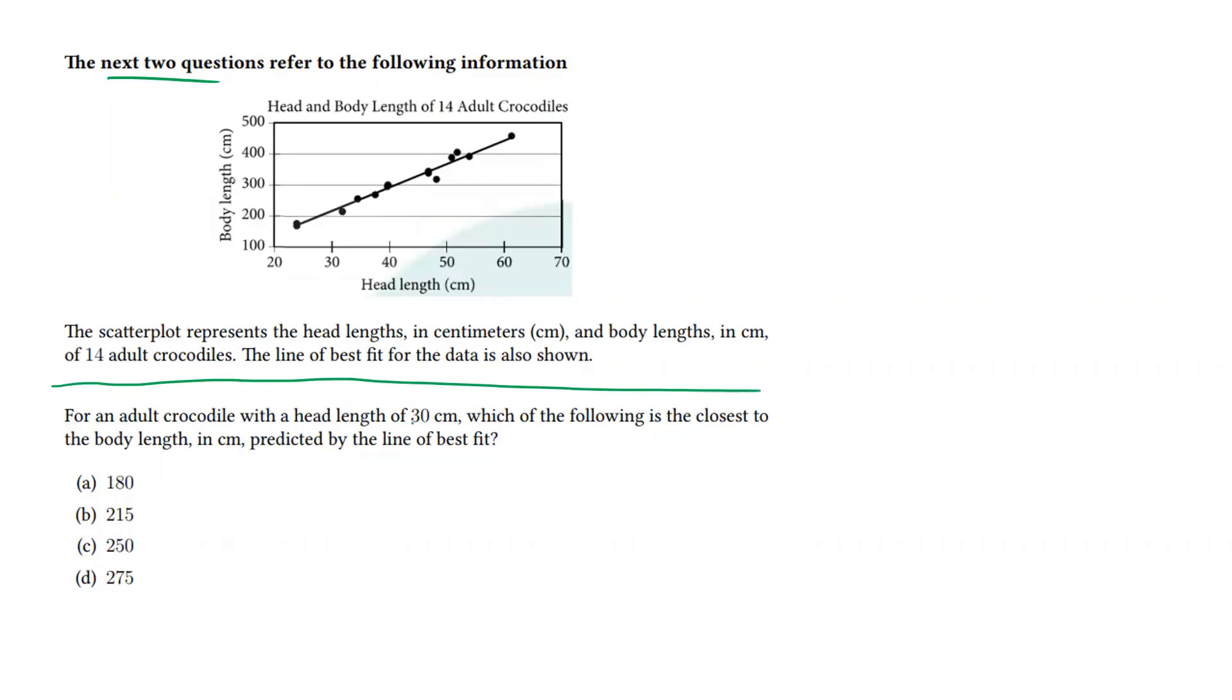For an adult crocodile with a head of 30 centimeters, we want to know what the closest approximation is to the body length predicted by this line. We see that when it's 30, the line is about this high, which is a little bit more than 200, but definitely less than the halfway mark, which would be 250. Thus, we have option B, 215.